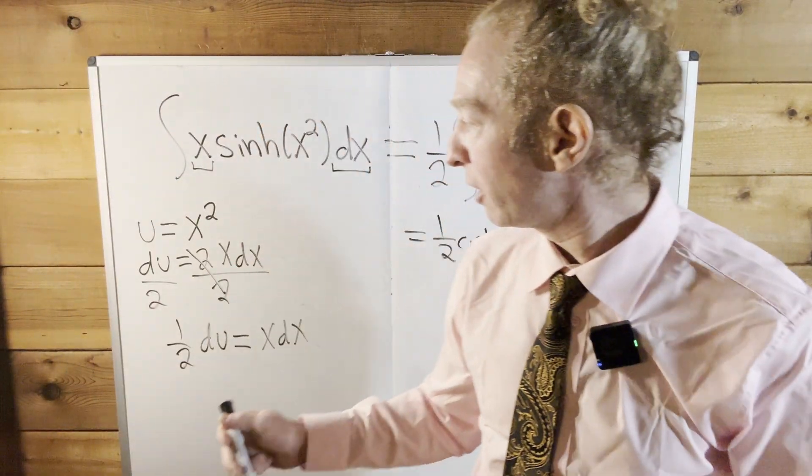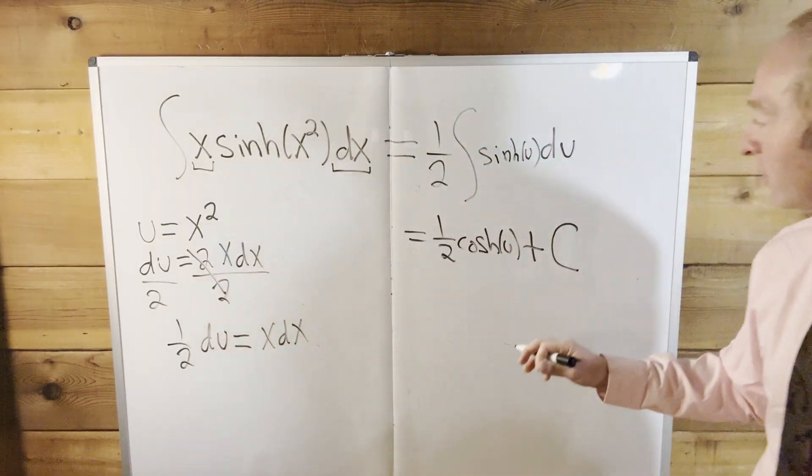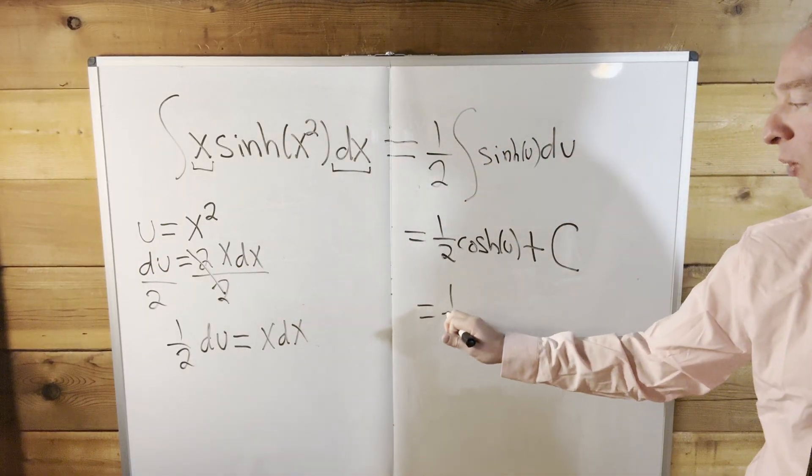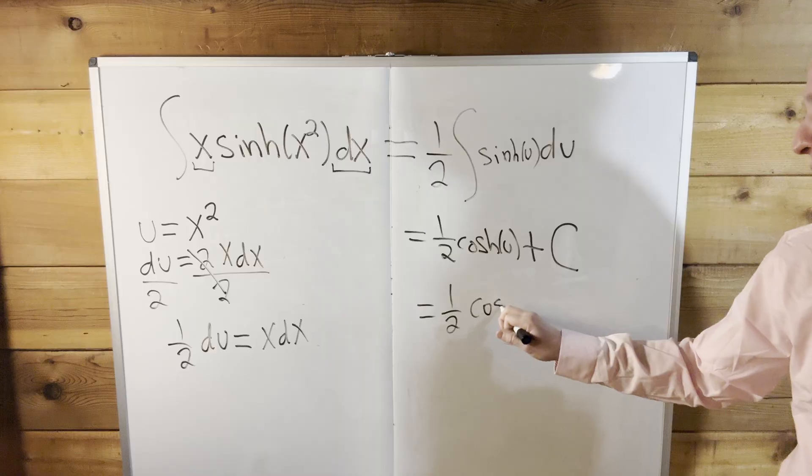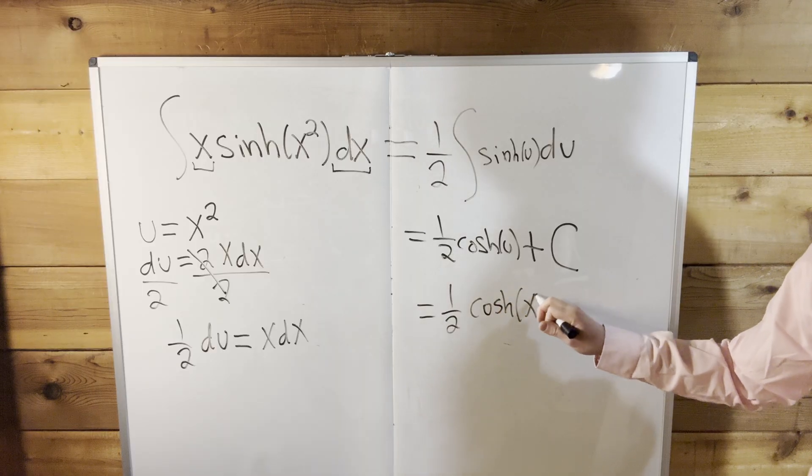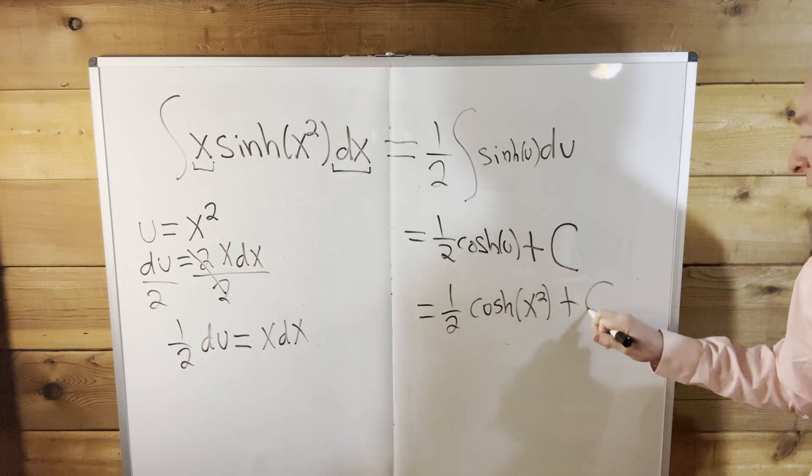To do that, we look at our substitution. u equals x squared. So this is equal to 1/2 cosh of x squared plus C.